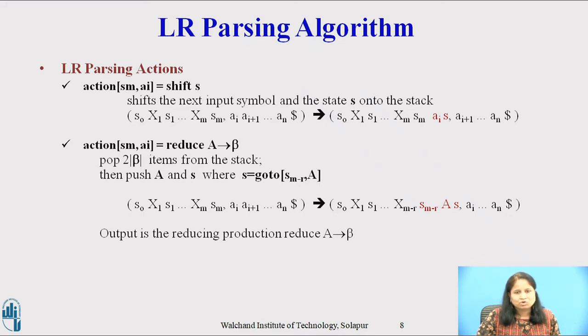If the action SM comma AI equals reduce A derives B, then the parser executes a reduce move. Where S equals goto of SM minus R comma A and R is the length of B, the right side of the production. The parser first pops 2R symbols off the stack exposing the state SM minus R. The parser then pushes both A, the left side of the production and S, the entry for goto SM minus R comma A onto the stack. The current input symbol is not changed in a reduce move. The output is generated after a reduce move by executing the semantic action associated with the reducing production.